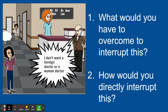Now that you've seen those two interactions where our active bystander asks a question and uses a three-part statement, there's another scenario you are going to look at. Number one: what would you have to overcome to interrupt this scenario? And number two: how would you directly interrupt the situation? In this picture, there's an older man standing in front of a receptionist's desk, and a nurse or receptionist is standing there with a frown on her face. The man is saying, 'I don't want a foreign doctor or a woman doctor.' On the wall, there's a sign that says Dr. Ed Chan and Dr. Ann Lee. What would our active bystander — the same woman in the purple shirt — be thinking? What does she have to overcome to interrupt this, and how would you directly interrupt this if you were this woman?